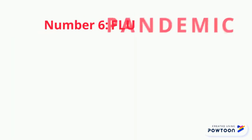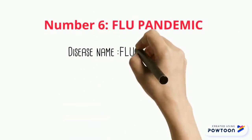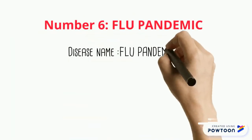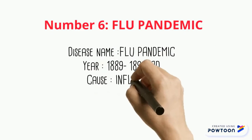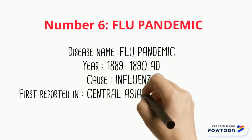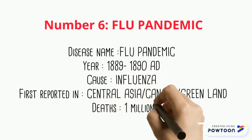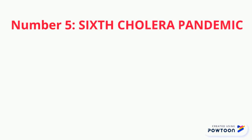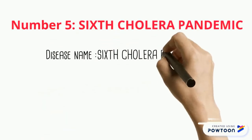Number 6 is the Asiatic Flu, or Russian Flu as it was called. First reported in Central Asia, this strain was thought to be an outbreak of the influenza virus subtype H2, and the 1889 to 1890 flu pandemic claimed the lives of over a million individuals.